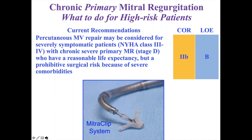Traditionally, when the mitral valve was leaking severely, the only treatments were medical therapy or open surgical mitral valve repair or replacement. A few years back, for patients with degenerative mitral valve disease — meaning a problem with the valve from birth that progressed — an approval was made for a device called the MitraClip, which is essentially a staple that pulls together the leaflets of the valve that are not coming together, improving the leak. This was shown to be effective in high-risk patients with degenerative mitral regurgitation.